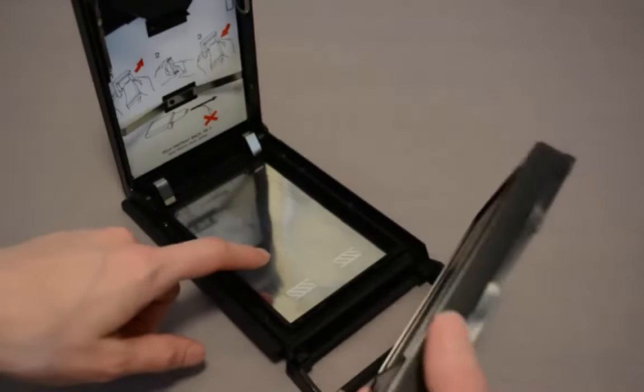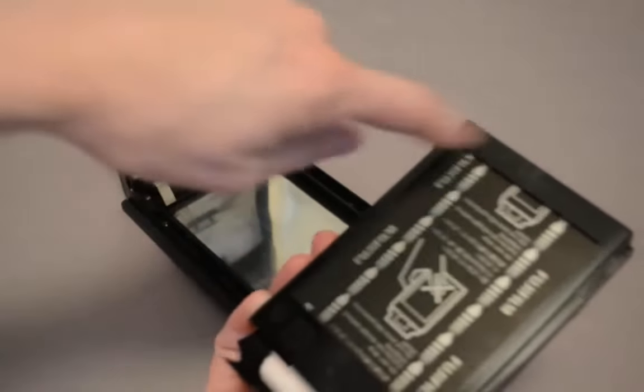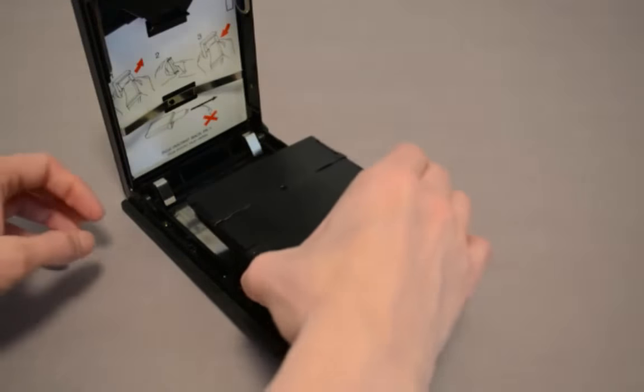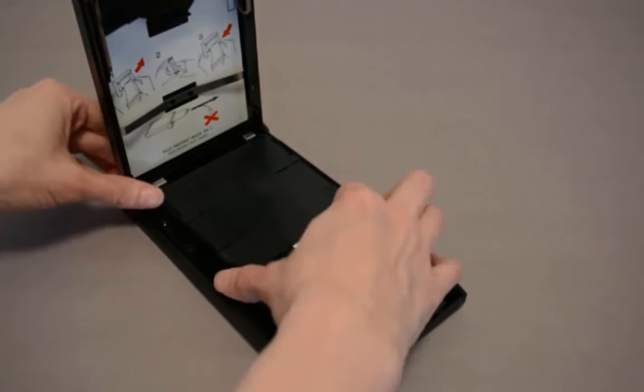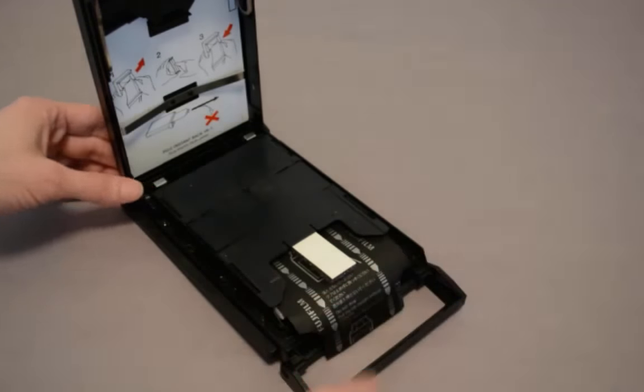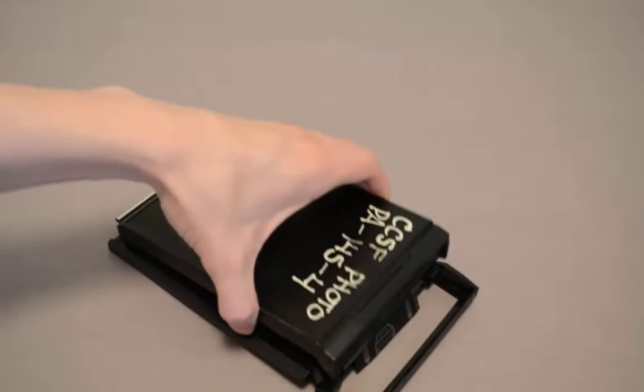Tip it into position against the dark slide where the little window is. Don't disturb the paper. Push it back into the film holder gently and then close the back.